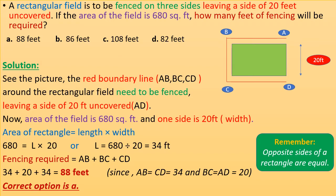A rectangular field is to be fenced on three sides, leaving a side of 20 feet uncovered. If the area of the field is 680 square feet, how many feet of fencing will be required? The red boundary line around the field needs to be fenced, leaving one side of 20 feet uncovered — that is the width of the rectangular field.